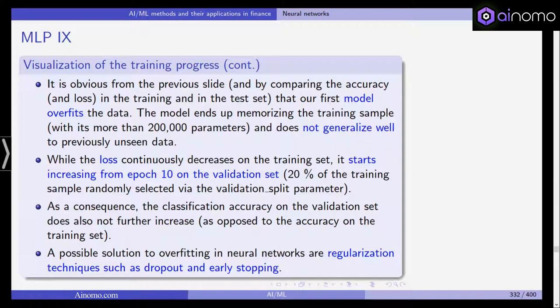What happens is the model ends up memorizing the training sample because we have more parameters than we actually have observations. We could simply store all our observations in one or more parameters, and thus it does not generalize well to previously unseen data. With loss continuously decreasing on the training set, it starts increasing from epoch 10 on the validation set.